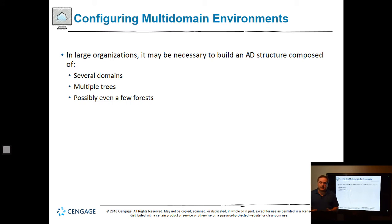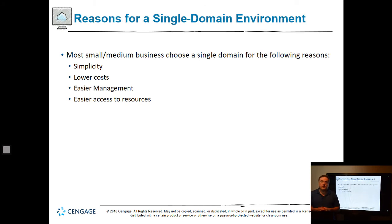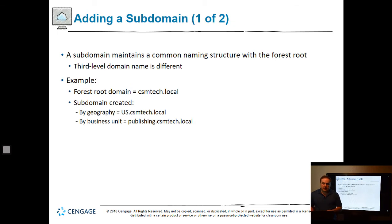In a large organization, it's going to be necessary to build a structure composed of several domains, multiple trees, possibly even several forests. Most small and medium-sized businesses choose a single domain because it's simpler, lower cost, easier to manage, and easier to access resources.